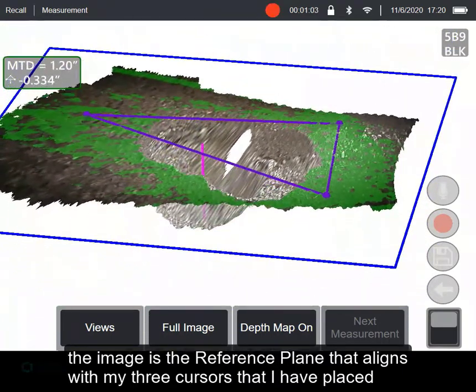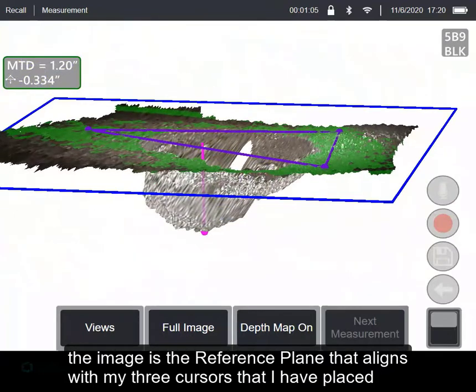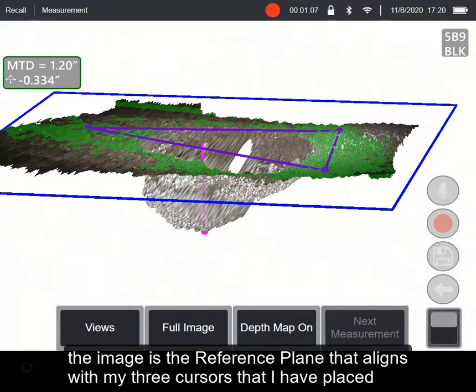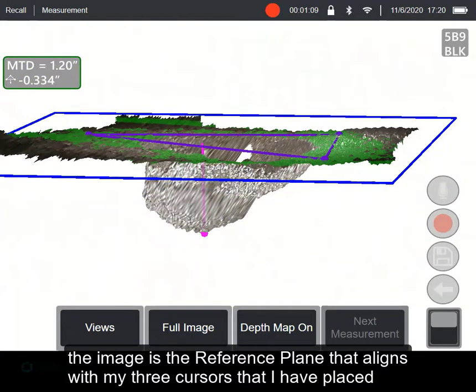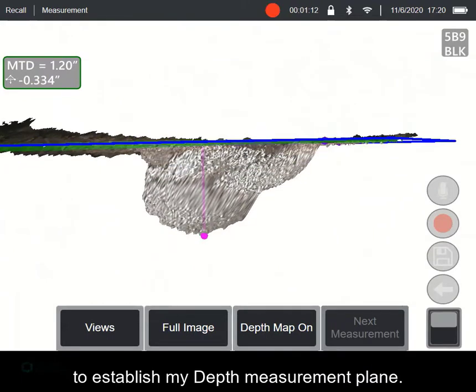The blue square around the image is the reference plane that aligns up with my three cursors that I've placed to establish my depth measurement plane.